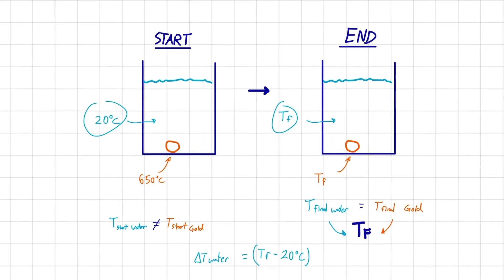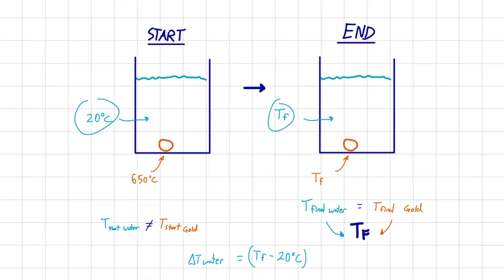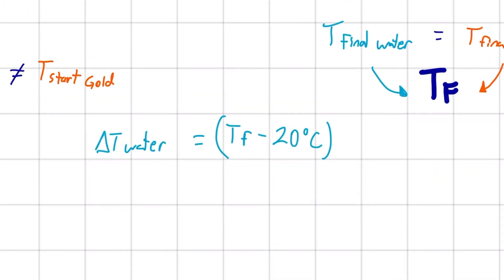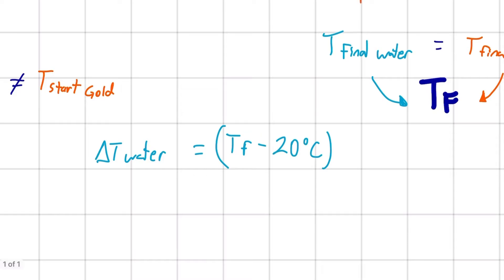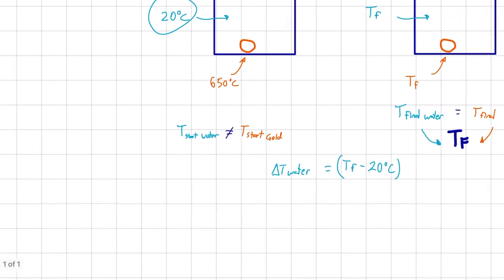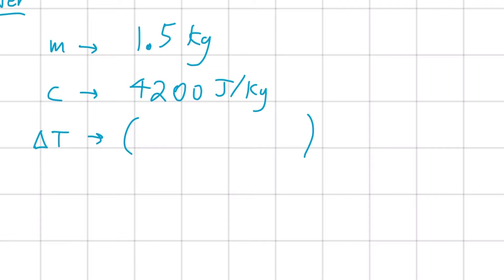To understand this: imagine hypothetically the gold brought the water temperature up to 40 degrees Celsius. If Tf were 40 degrees, there would be a change in temperature from 20 to 40 — a difference of 20 degrees Celsius, and 40 minus 20 equals 20 degrees Celsius. That's just an example to illustrate the formula. The delta T of water is Tf minus 20.